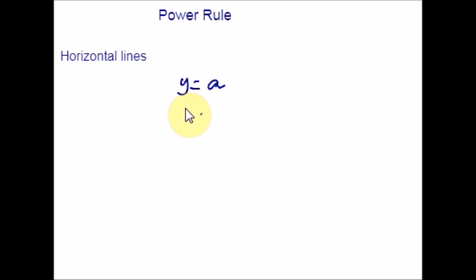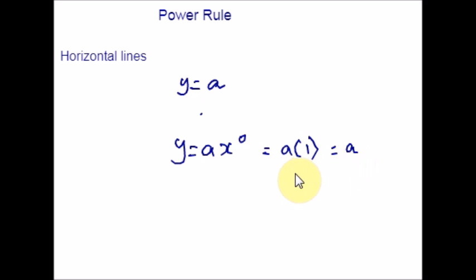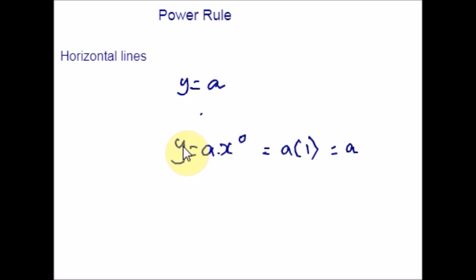However, the law of indices tells us that x raised to 0 is equal to 1, so a times 1 is a. Replacing 1 with x raised to 0 gives y equal to a times x raised to 0. If you think about the graph the equation represents, the gradient is given by the derivative and by the change in y divided by change in x. For a horizontal line, the change in y is 0, so the gradient of the horizontal line is 0. This is an important result reflected in the fact that the derivative of a constant is 0.